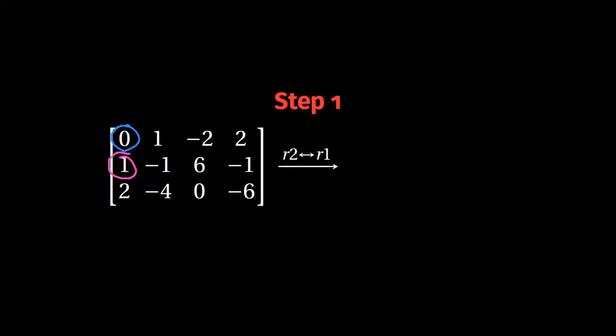And this is what we are going to do. As you can see, we wrote R2, double arrow, R1. So we go on and what we are doing is exactly this. We put row one in position two and row two in position one.